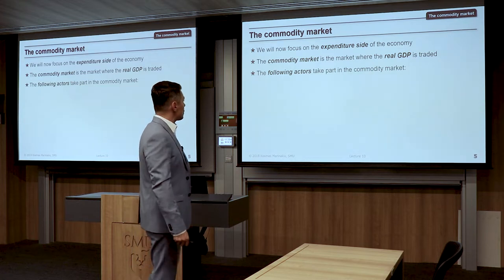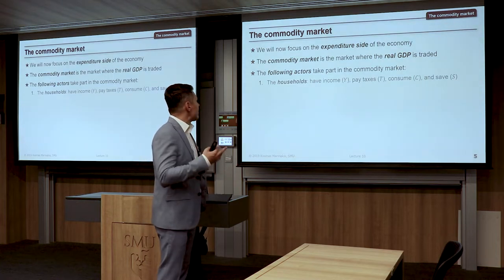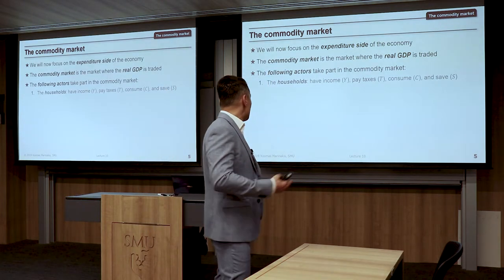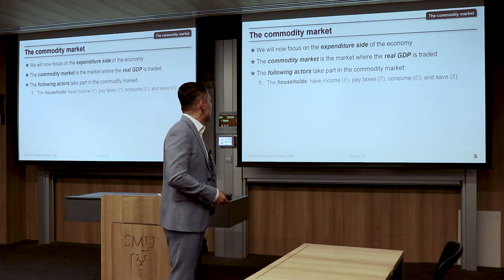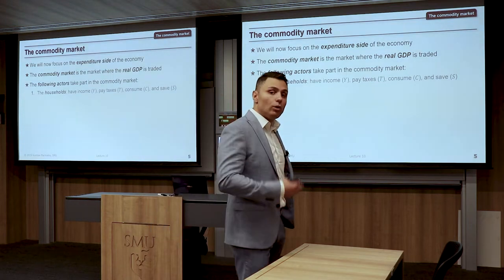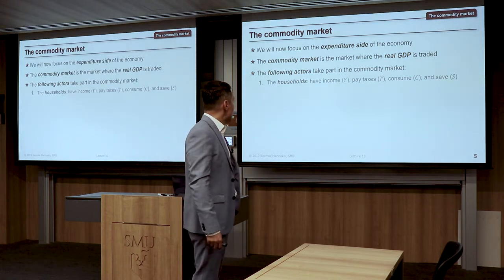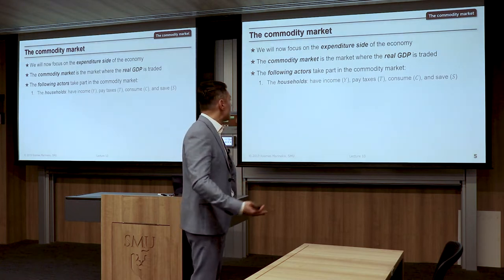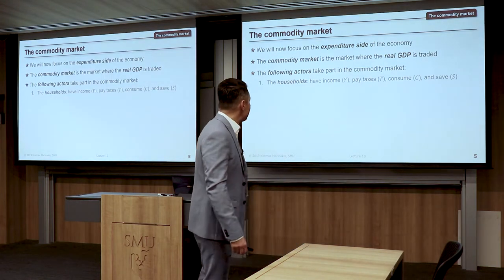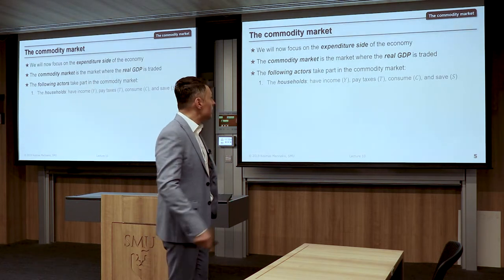The following actors take part in the commodity market. The first is households. Households have income Y, they pay taxes T, they consume C, and they save S. Taxation will be incorporated in our model from today. So we have real income Y — the output that is produced — then some income is paid to the government, denoted by T. After that, households either consume income or save it for later consumption.